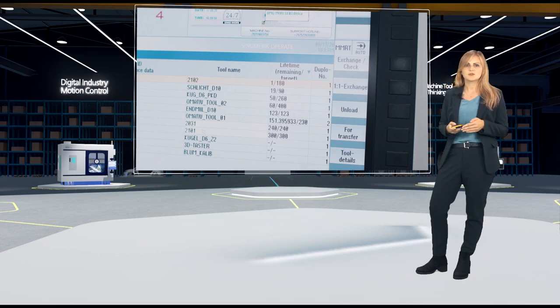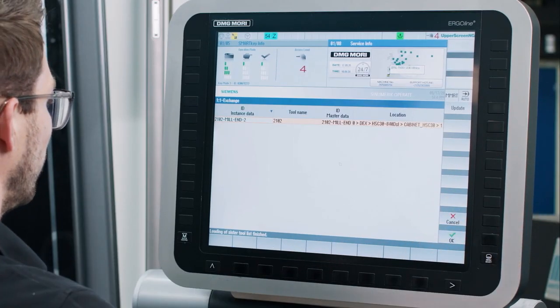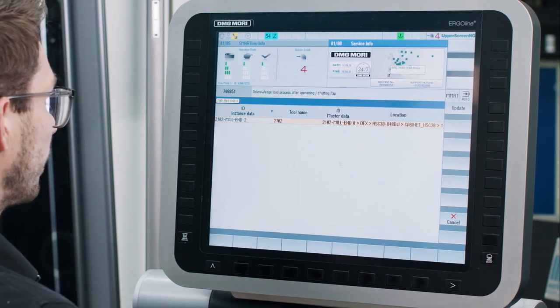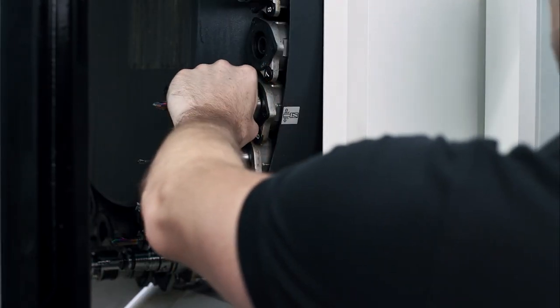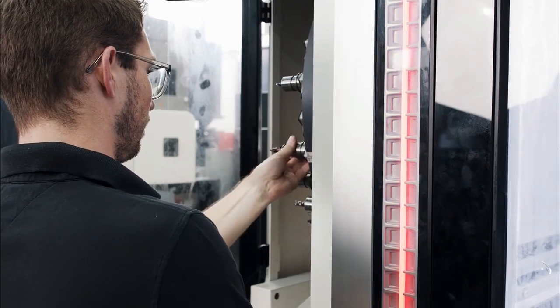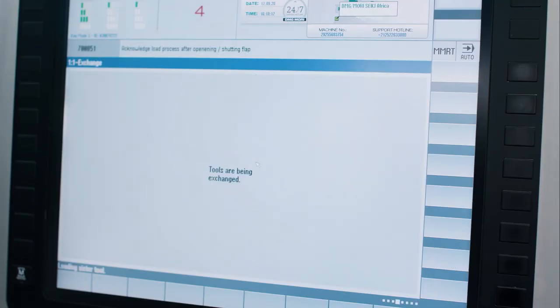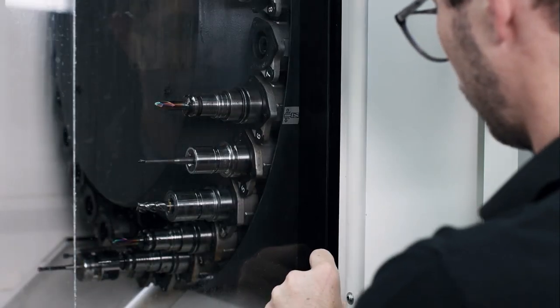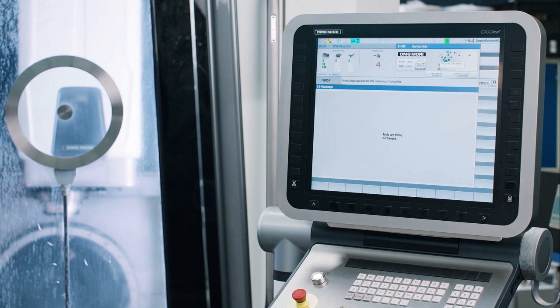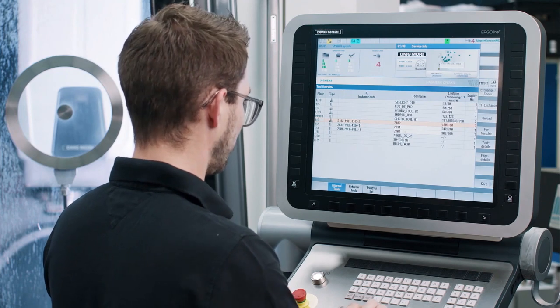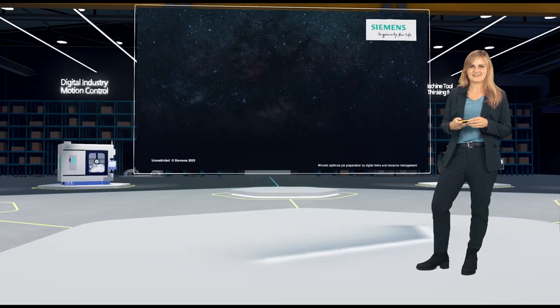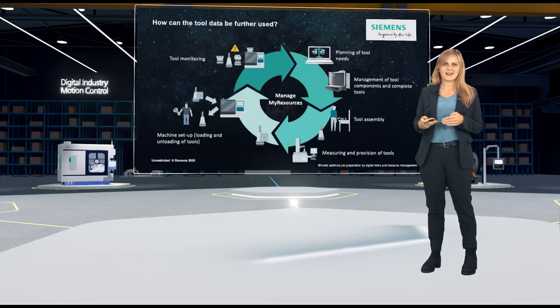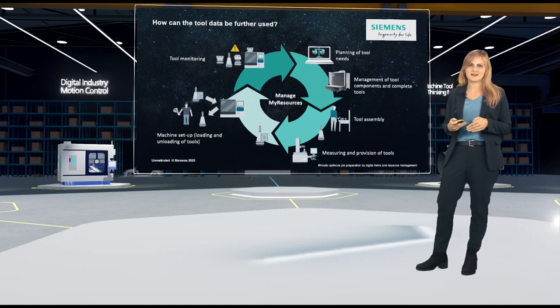As you will see right away, ManageMyResources can also help to save effort here. With the user dialogue for the so-called one-to-one exchange, the removal of the worn and the loading of the new tool can be done in one process. This saves walking distances, manual effort and time. And of course, the software automatically transfers the correction data in the background, as shown before. Especially in processes with high tool consumption, the setup process can be speeded up considerably and, of course, errors can be minimized.